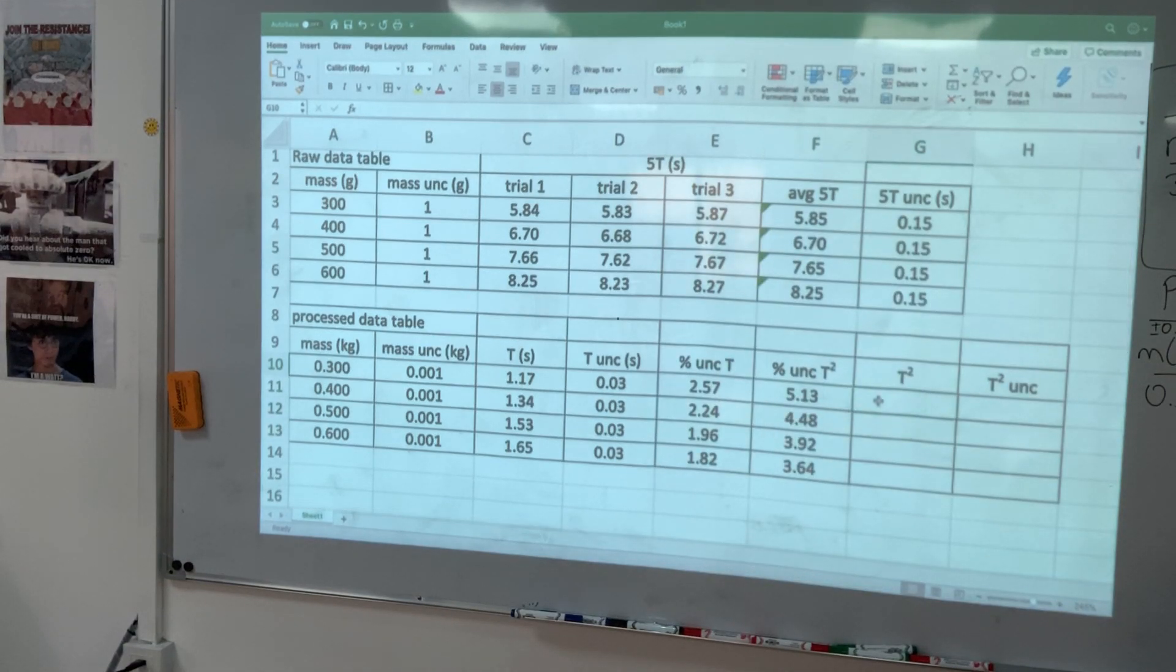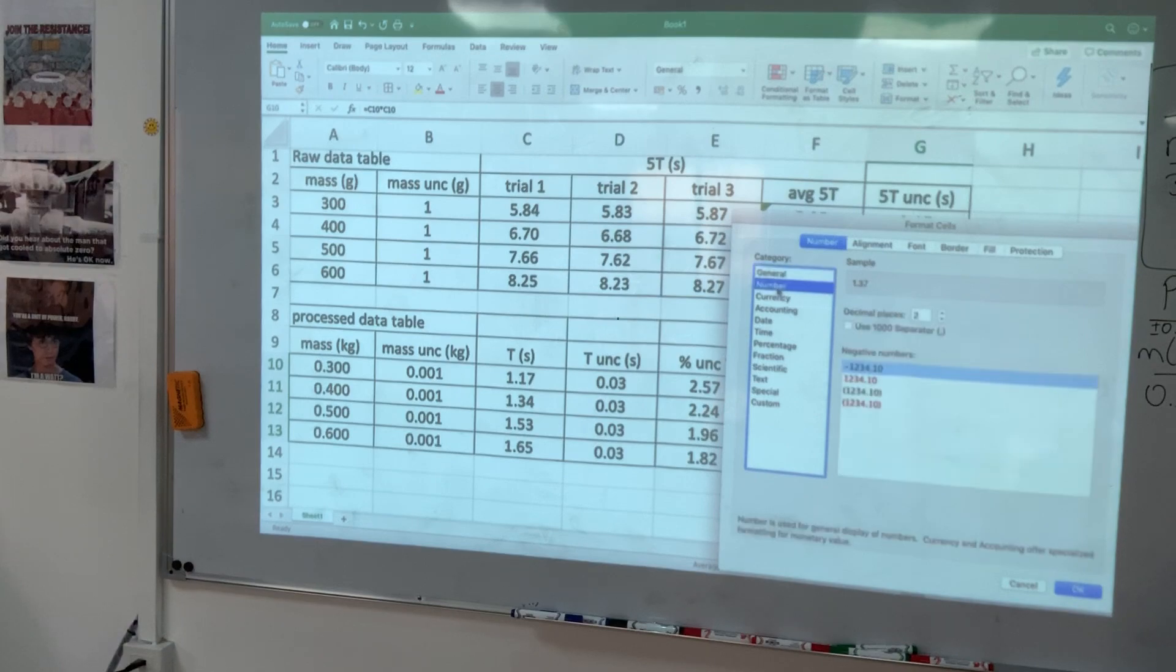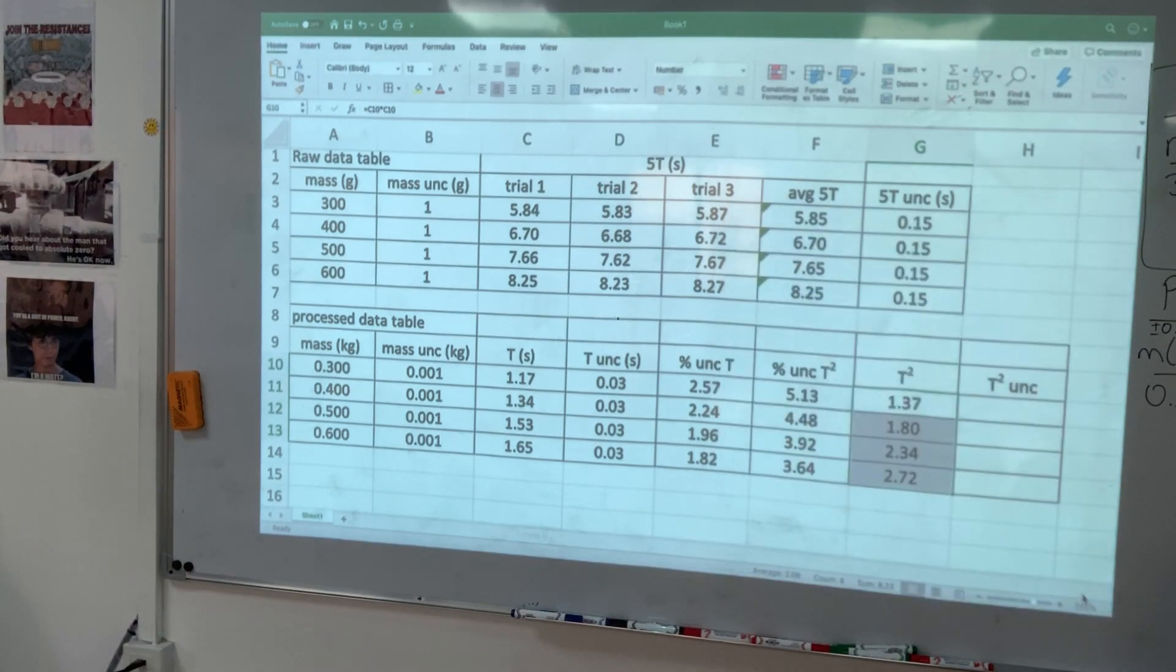Now T squared values. What is T squared? Calculate that number, multiply by that number, enter. Select, little black plus sign, drag, drop. Select everything, format, number, two decimal places, happy.